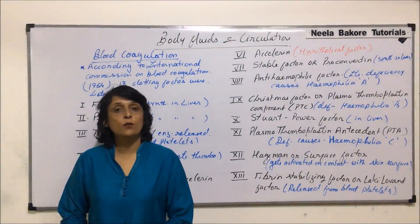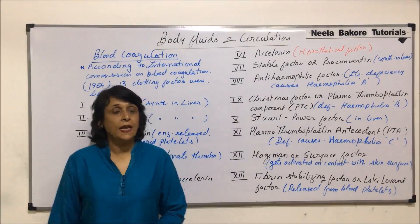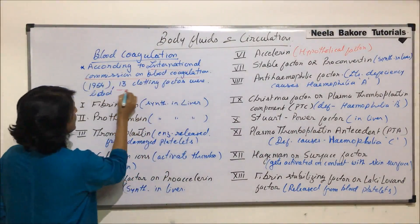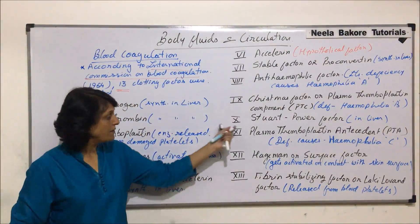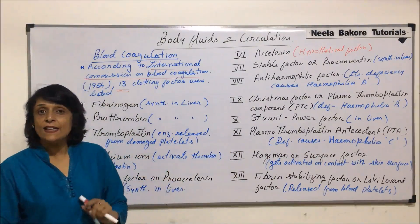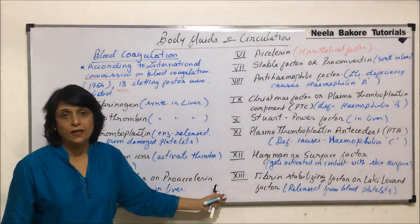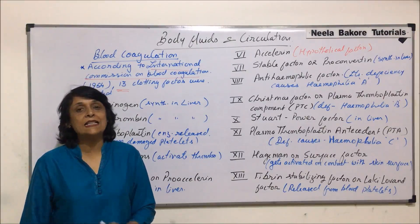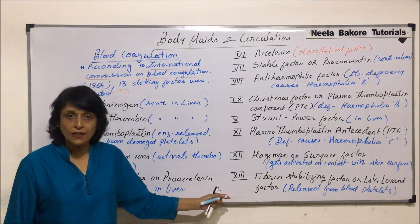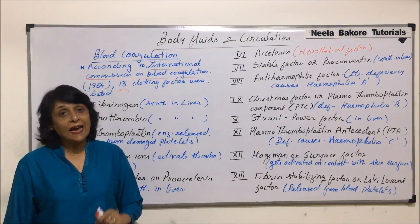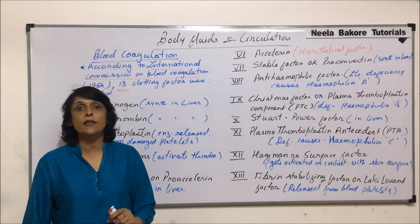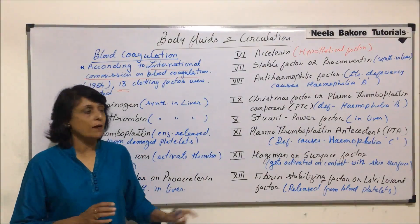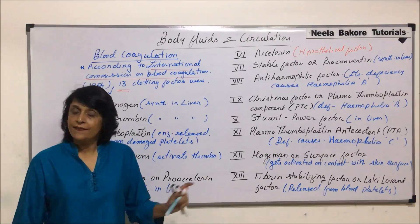We will talk about blood coagulation or blood clotting. According to the International Commission on Blood Coagulation, 13 factors were listed out, numbered from 1 to 13 with Roman numerals. They normally circulate in the blood as inactive molecules or proteins, and they get activated only when there is any kind of injury or damage to the platelets. Their activation works like a cascade mechanism.